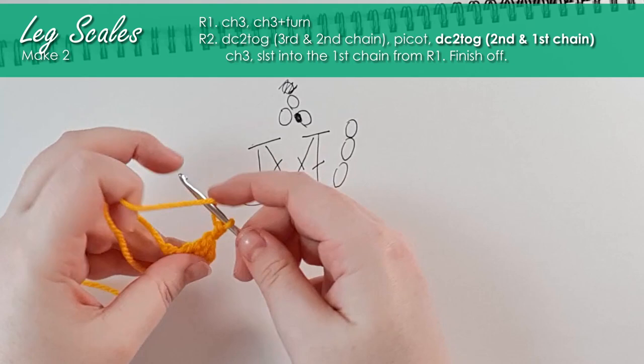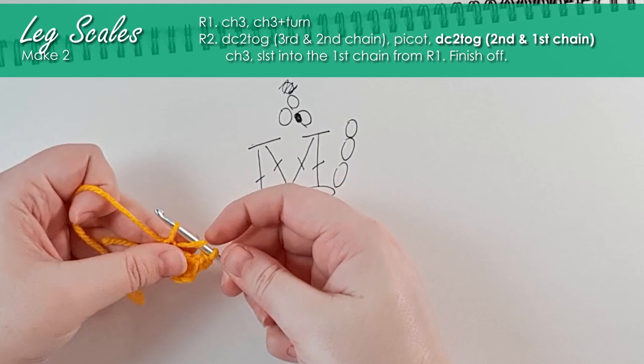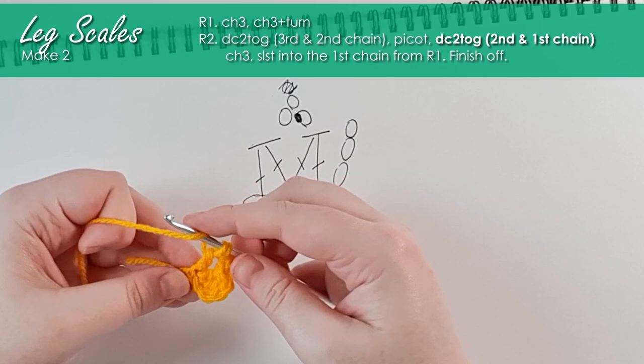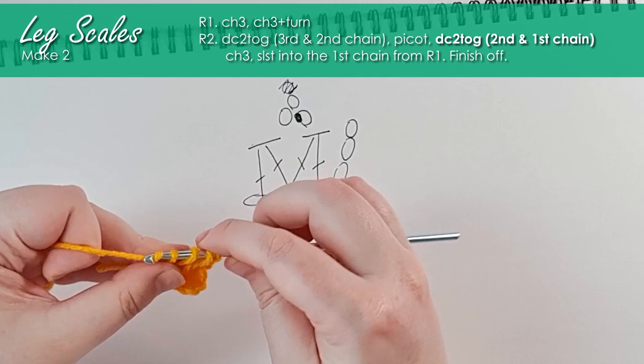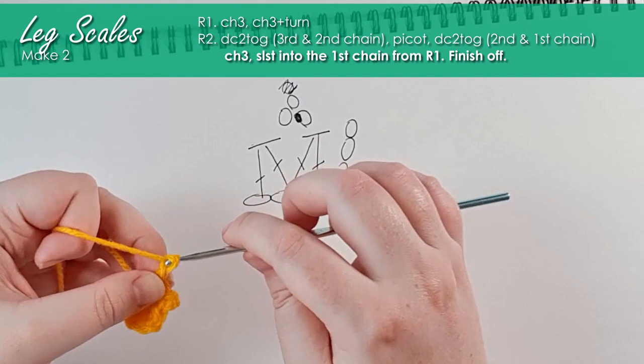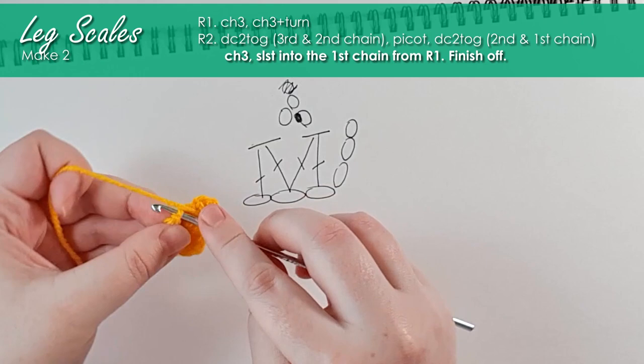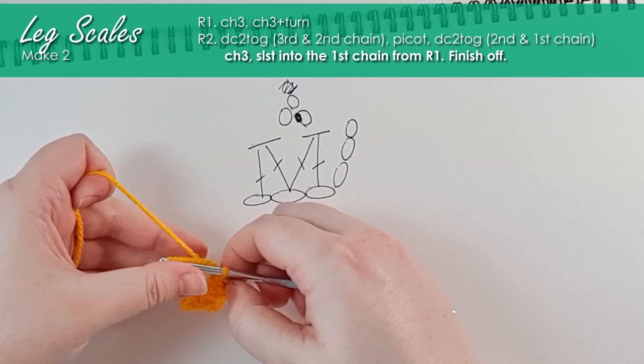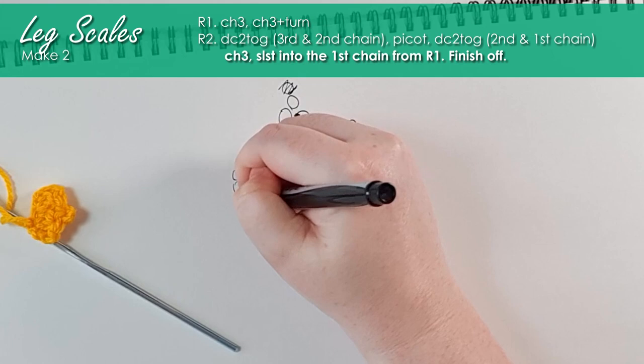I'm going to yarn over, insert back through that middle chain, yarn over and pull up a loop, yarn over and pull through the first two — there's the start of that first double crochet. Then yarn over and do the same thing in that last chain along. So we're back at the point where we have two half-formed double crochet and our active loop. Yarn over and pull through all three. Then I'm going to chain three and slip stitch into that first chain of the base.